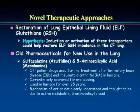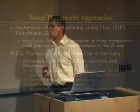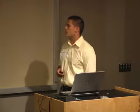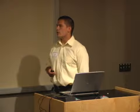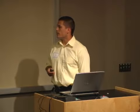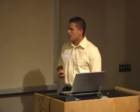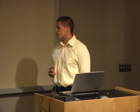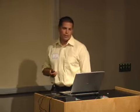We'd like to explore this by looking at sulfasalazine and its metabolite 5-aminosalicylic acid. These are both off-patent drugs used for the treatment of inflammatory bowel disease and rheumatoid arthritis for the past 25 years. Currently approved only for oral dosing, the mechanism is not yet fully understood but is thought to involve the metabolite 5-aminosalicylic acid.